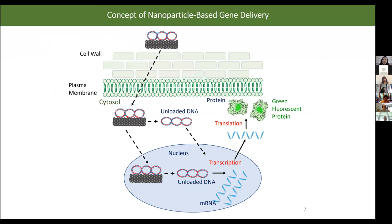Without going into the chemistry in detail, the concept is that we can load DNA plasmids or other biomolecular cargoes onto the nanotube, which then traverses the cell wall and plasma membrane, allowing the cargo to be accessed. In the case of RNA, this would be in the cytoplasm; in the case of a plasmid, this would be in the nucleus, where transcription and translation allow us to validate the platform through production of a reporter protein such as green fluorescent protein.